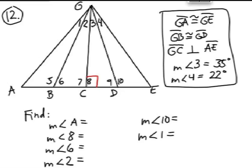GA is congruent to GE. GB is congruent to GD. GC perpendicular to AE, which is already marked. Measure of angle 3 is 35 degrees. Measure of angle 4 is 22 degrees.